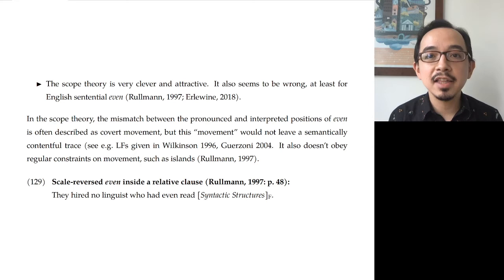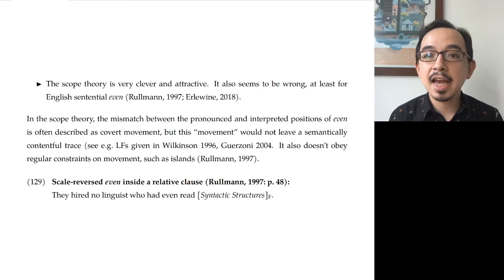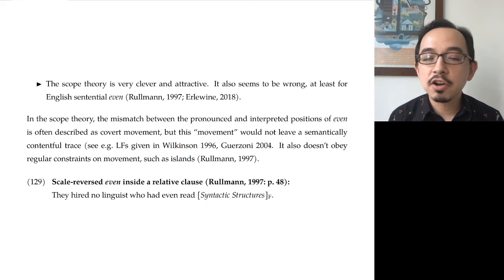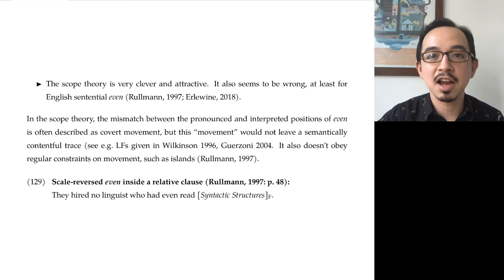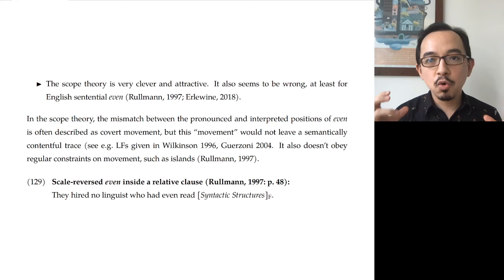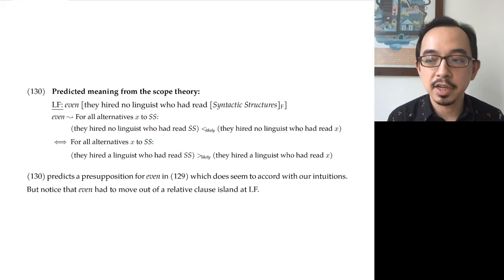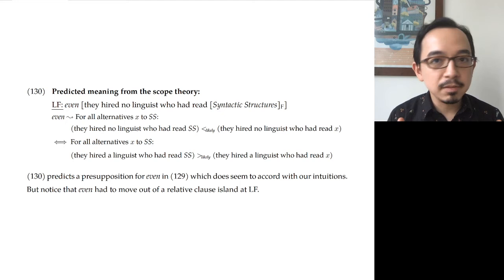Second, it doesn't obey the locality constraints that we imagine covert movement is normally subject to. In example 129, 'They hired no linguist who had even read Syntactic Structures,' this is grammatical in a context where Syntactic Structures is something people are expected to read. Under the scope theory, even has to be interpreted higher than where 'no linguist' takes scope — somewhere in the matrix clause with an LF like example 130 — giving roughly the right interpretation.